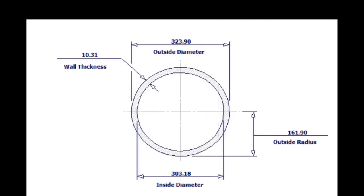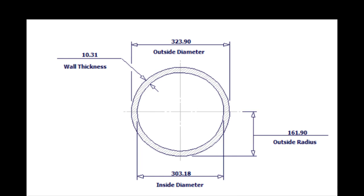Outside diameter of a 12-inch pipe is 324 millimeters. Let us calculate the circumference. Multiply 324 into 3.14. The answer is 1017 millimeters.